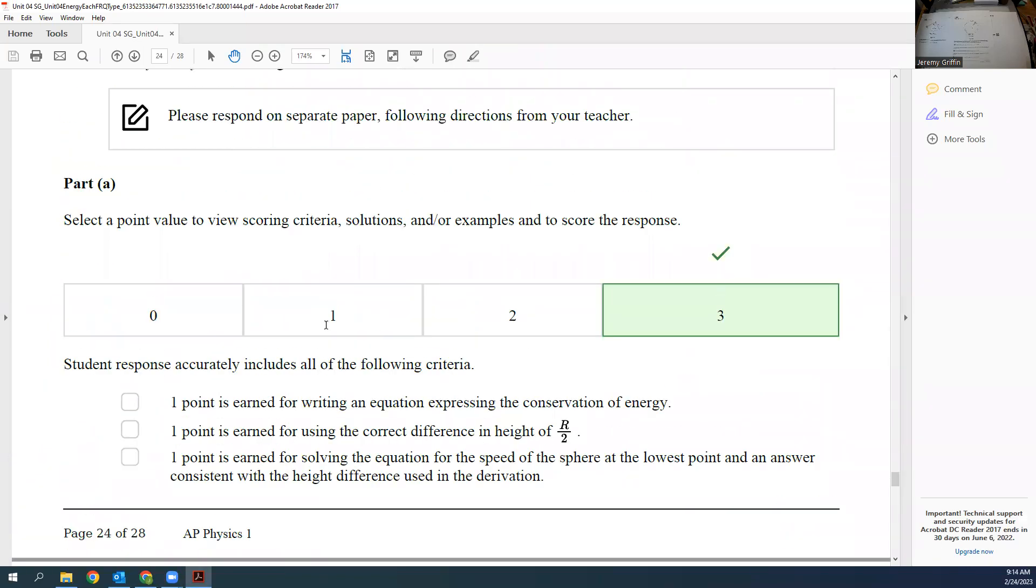You guys have seen plenty of pendulum. You know you're going to do conservation of energy. Height difference, now r over 2. How do they get that there's a height change of r over 2? You had to figure it out. What is cosine of 60 degrees? One half. You guys see they started 60 degrees from the vertical. Cosine of 60 degrees is one half, so r minus half r is the other one half r.